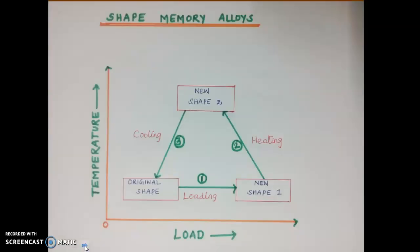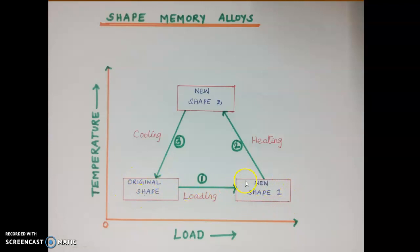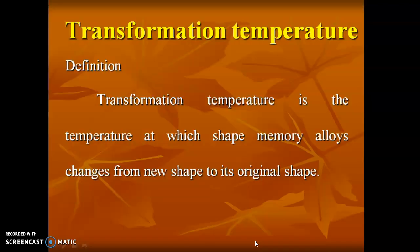This is a schematic diagram of a shape memory alloy. This is the original shape. When the material is subjected to heating, the shape of the material changes. When it is cooled down again, the material comes back to its original shape. This is called shape memory.